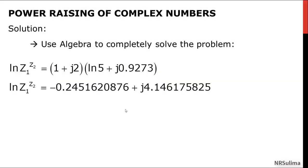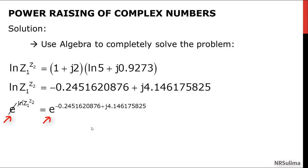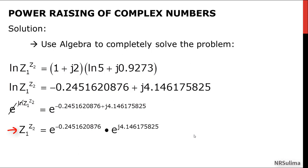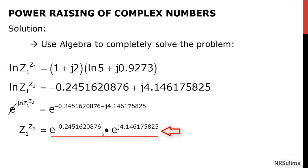Even though we have simplified the right side, the left side still has ln of z1 to the power of z2. We need to remove ln by applying the exponential on both sides. This cancels ln on the left side, giving z1 raised to the power of z2, while the right side becomes exponential of negative 0.245 plus j 4.146. We can split this as exponential negative 0.245 multiplied by exponential j 4.146. The term exponential negative 0.245 is a constant, and exponential j 4.146 is a complex number in exponential form with r equal to 1 and theta in radians equal to 4.146.